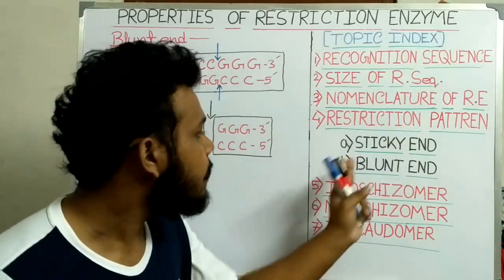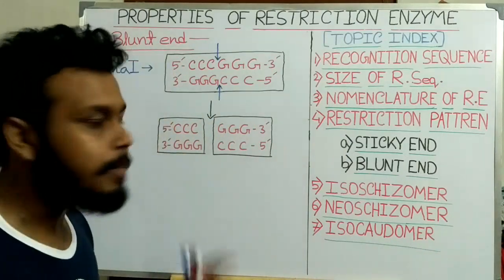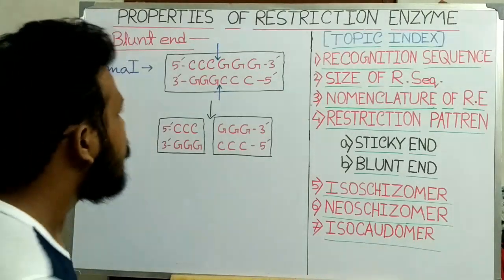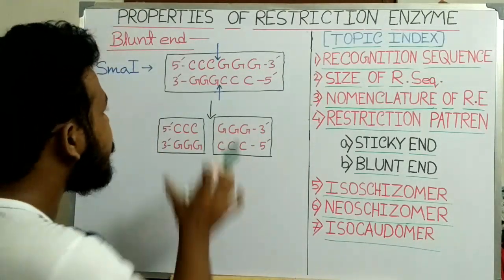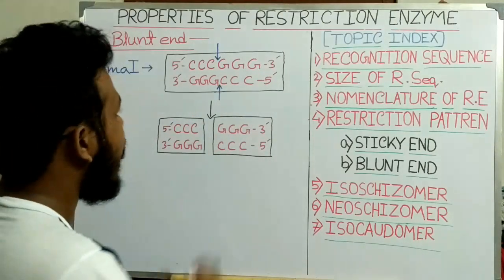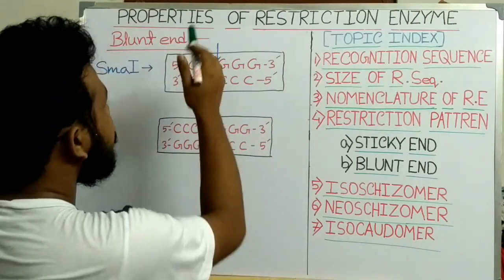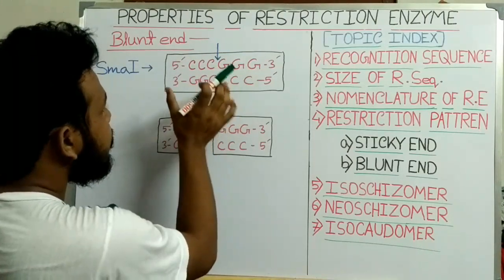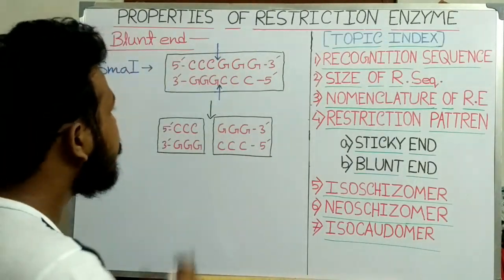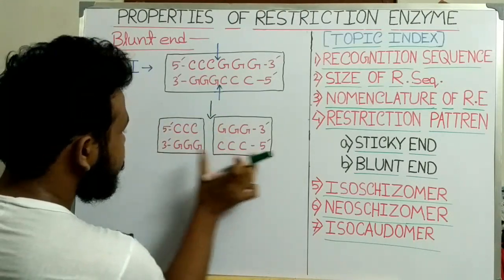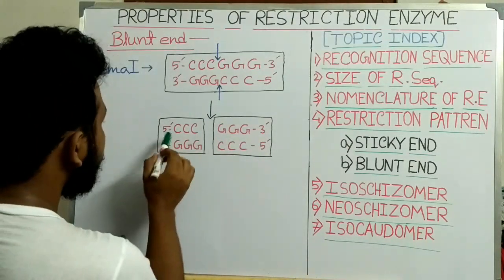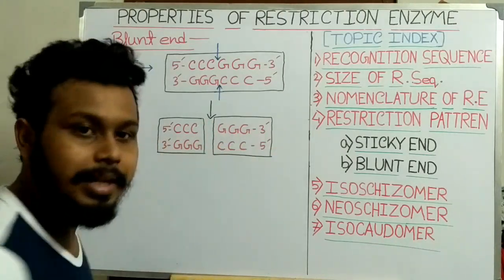The other restriction pattern is the blunt end. To explain the blunt-ended cut, I take SMA1 restriction enzyme as an example. SMA1 recognizes the sequence 5' CCCGGG 3'. It produces a parallel cut in the same position of both strands but on opposite sides — this is called the blunt-ended cut. It produces two fragments with 5' CCC 3' and GGG 3' blunt ends.